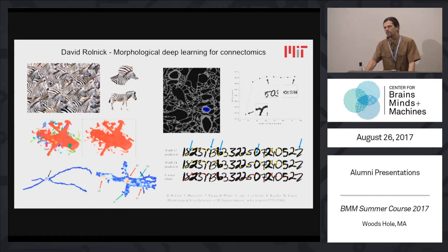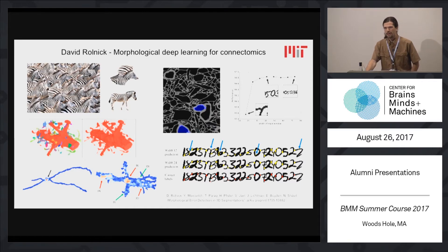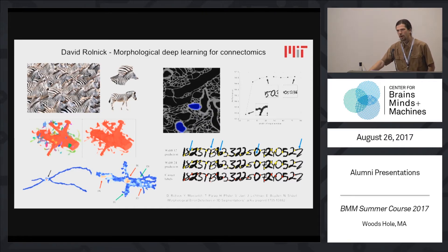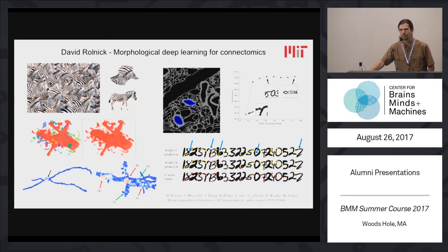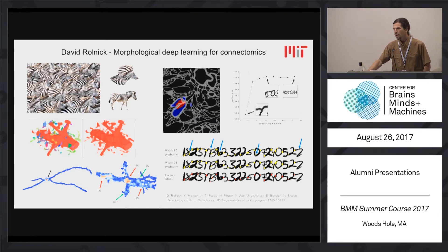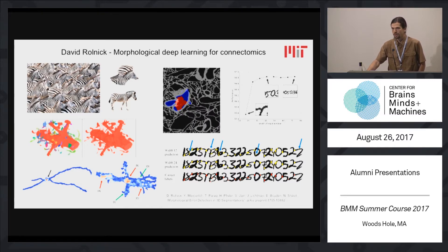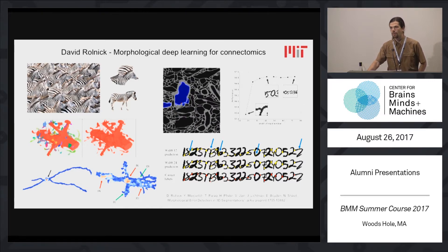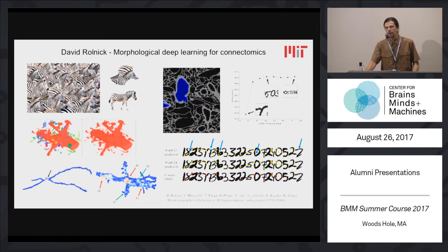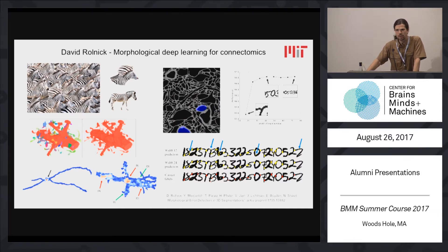I wanted to talk about something more neuroscience-oriented today in the area of connectomics. Many of you will know that connectomics is about mapping the brain, both at the level of individual neurons and connections between them. There are a lot of neurons in the brain, so it's a really hard task to try to create a map of everything going on at a structural level, and it would take a really long time for a human to annotate images of the brain and create that map.